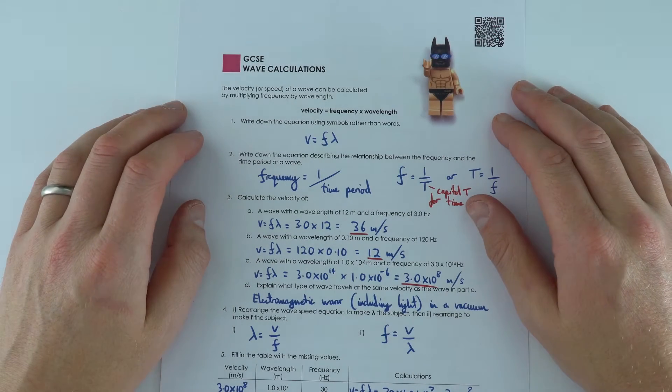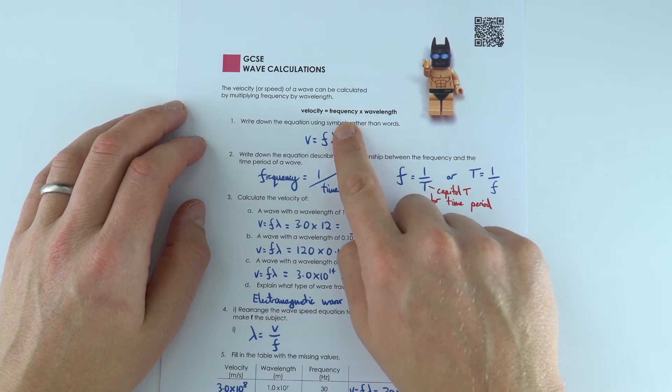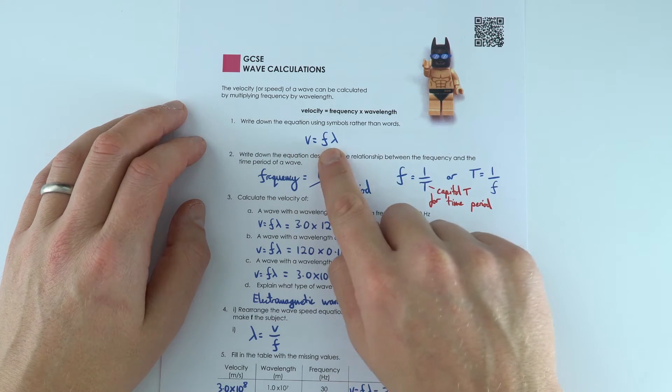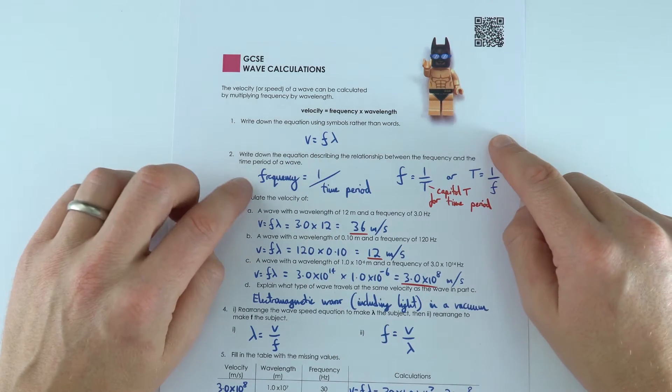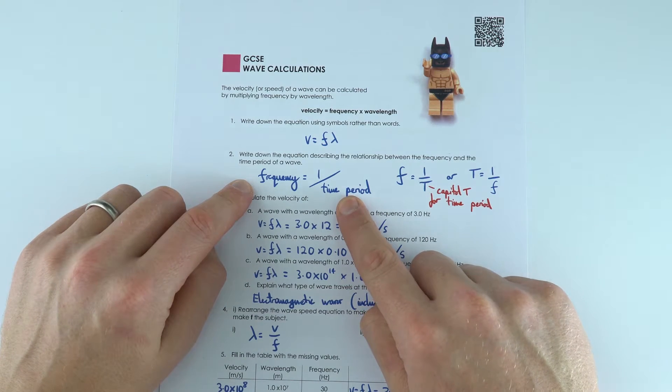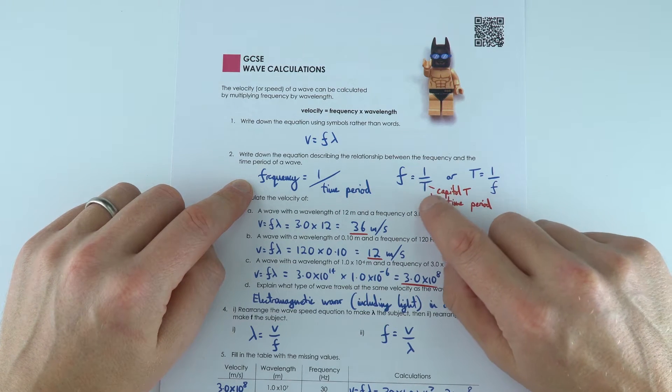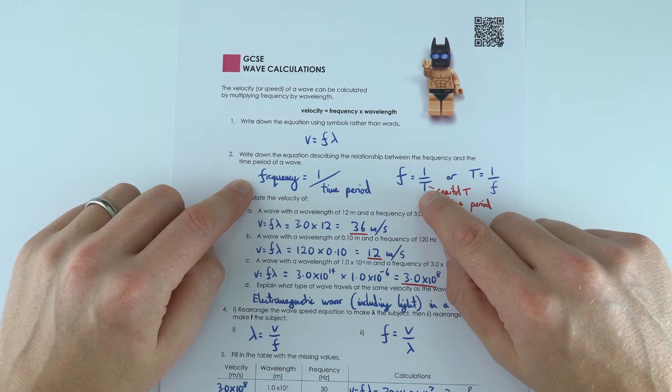So there are two equations you need to know about for waves. We've got velocity equals frequency times wavelength, or v equals f lambda, and also that frequency is equal to 1 over the time period, and we use a capital T to show the time period for one wave cycle.